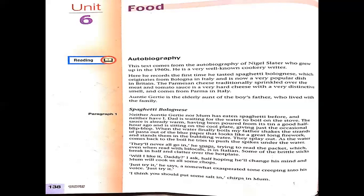Sauce is that thick liquid made from tomatoes, garlic, and such ingredients. 'Poured' means the flow of liquid from any container. What he has done is taken out the sauce from the tin and spread it on the plate to let it cool, giving just the occasional blip block sound.